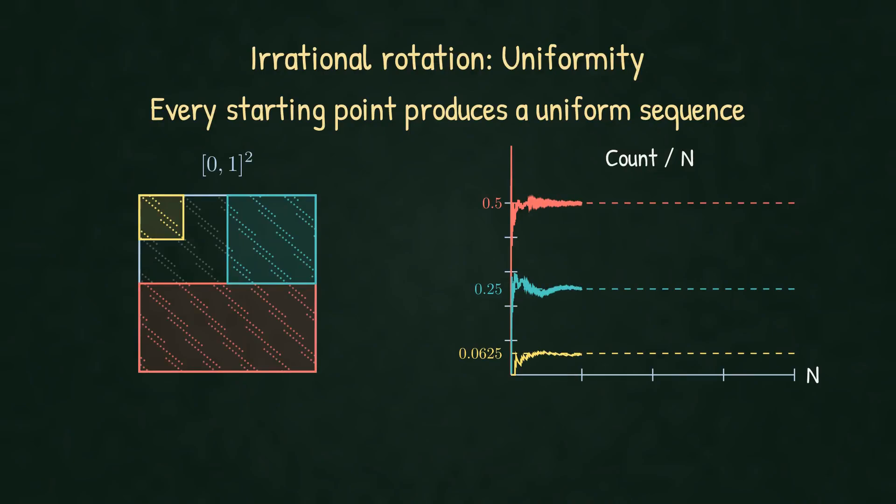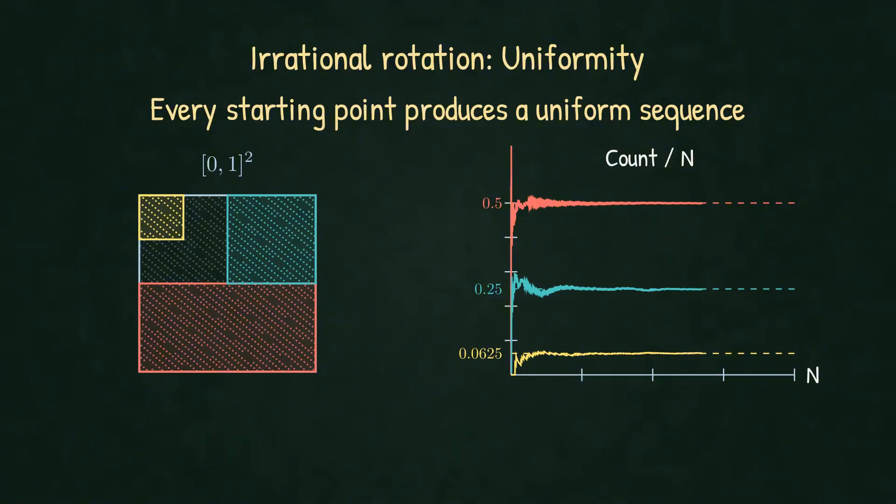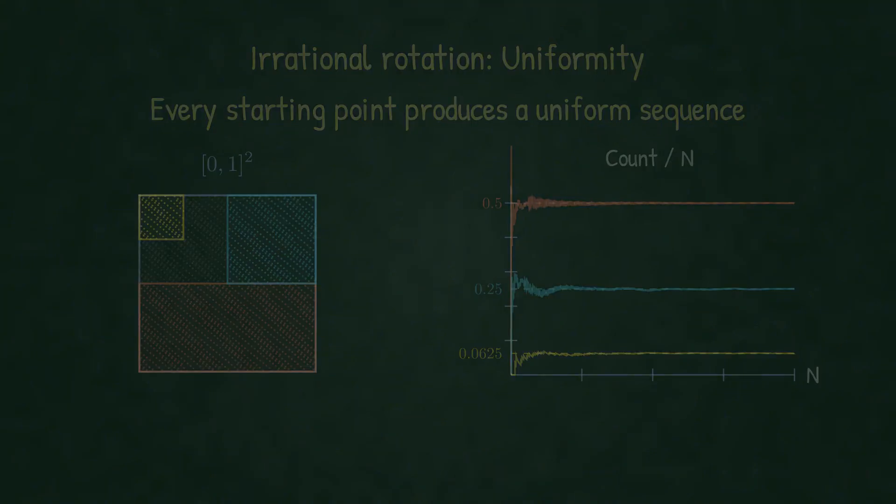Now let's test specific regions. The lower half, the running average converges to exactly 0.5 as expected. The upper right quarter converges to 0.25. Perfect. Even this tiny upper left region, a sixteenth of the total, converges to a sixteenth. The sequence is truly uniform. Every region gets its proportional share of points.